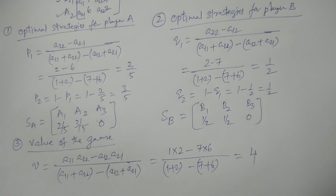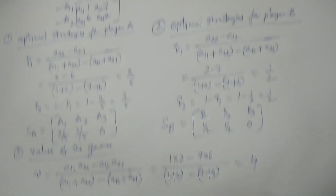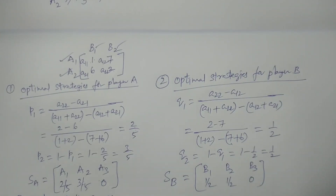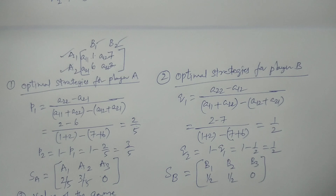This is the way to solve a problem using the dominance principle. In the dominance property, for any given M by N game, we reduce it into a 2 by 2 rectangular game and then solve using the formula. This is the solution of a game by using the dominance principle. Thank you.